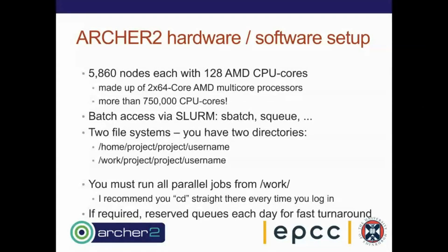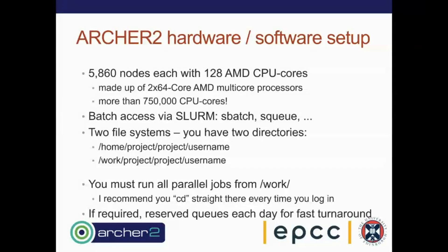ARCHER2 is a large-scale HPE Cray system — it used to be called Cray but was bought by HPE, so it's now HPE Cray. It's nearly 6,000 compute nodes, each with two processors giving 128 cores, and up to around three-quarters of a million compute workers across the whole system. It is possible to use all of them in a single job. We use a batch system called Slurm to submit and manage jobs, so you don't get direct access to all compute nodes all the time.